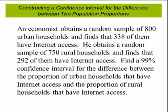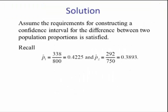Find a 99% confidence interval for the difference between the proportion of urban households that have internet access and the proportion of rural households that have internet access. Assume that the requirements for constructing a confidence interval for the difference between two populations is satisfied.